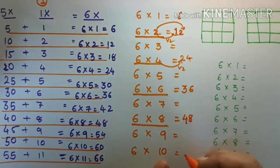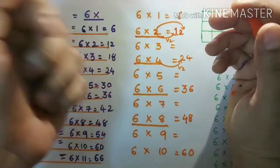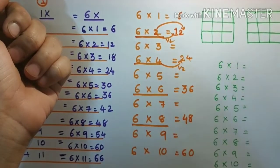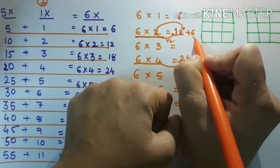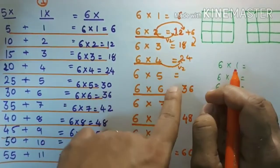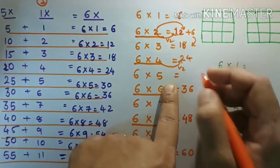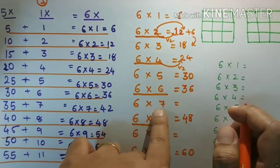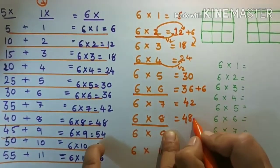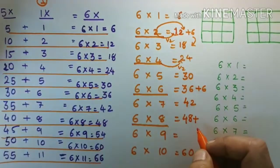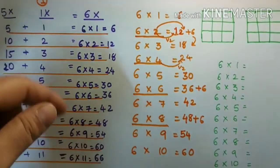Six tens are sixty. Now, six twos means six taken two times. Six threes means six taken three times. So add six each time: six twos are twelve, twelve plus six is eighteen for six threes. Add six again to get twenty-four for six fours, then thirty for six fives, thirty-six for six sixes. Six eights are forty-eight, plus six more gives fifty-four for six nines. That completes the second method.